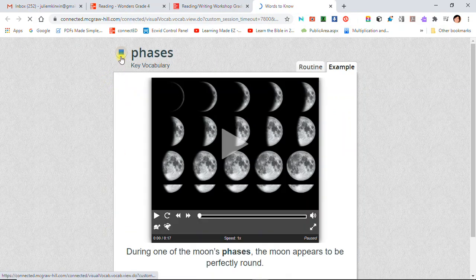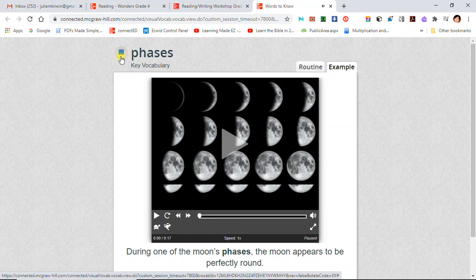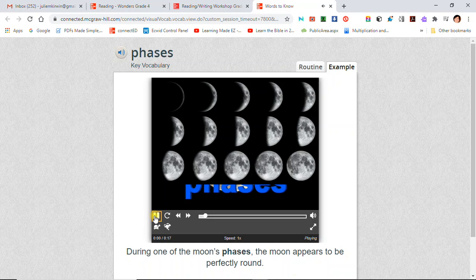During one of the moon's phases, the moon appears to be perfectly round. Phases are the different stages of the moon.